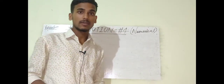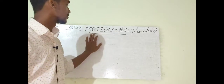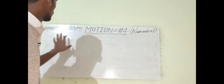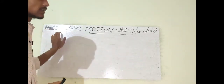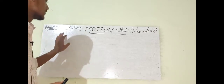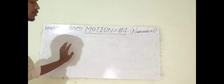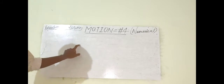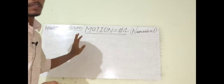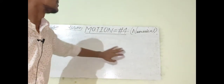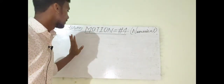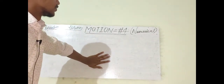Hi everyone, this is Siddharth. Today I am going to start a new lecture on motion. This is lecture number four and the topic I am going to cover is equations of motion and some numerical problems based on it. There are three equations of motion: V = U + AT, S = UT + ½AT², and V² = U² + 2AS. This is a very important topic.